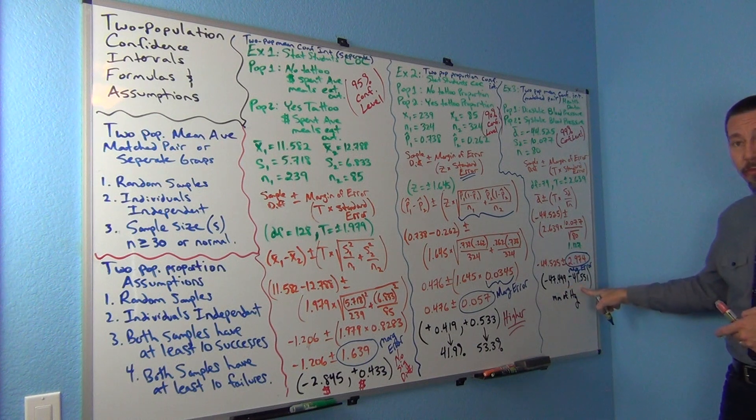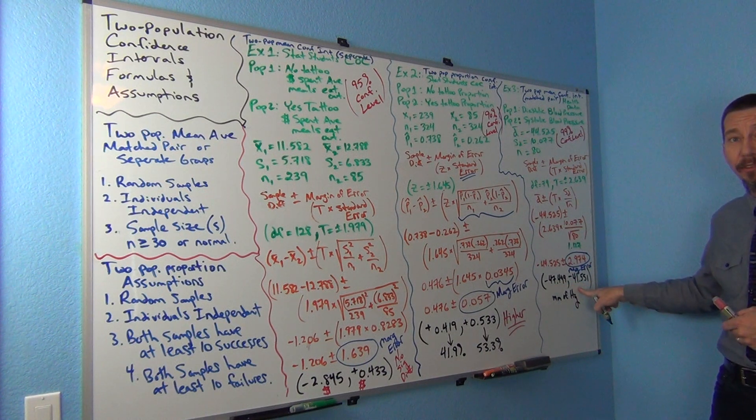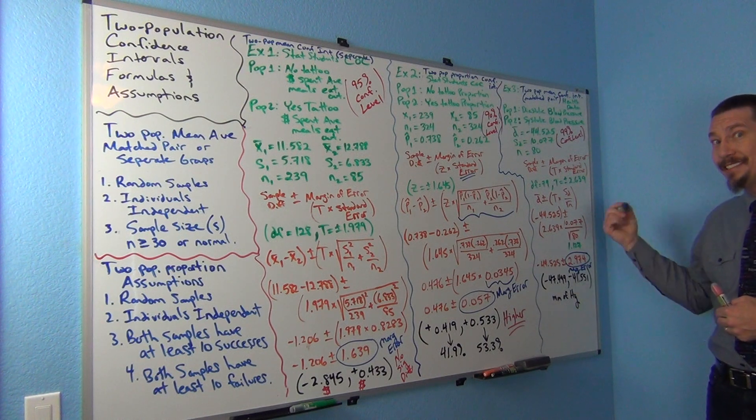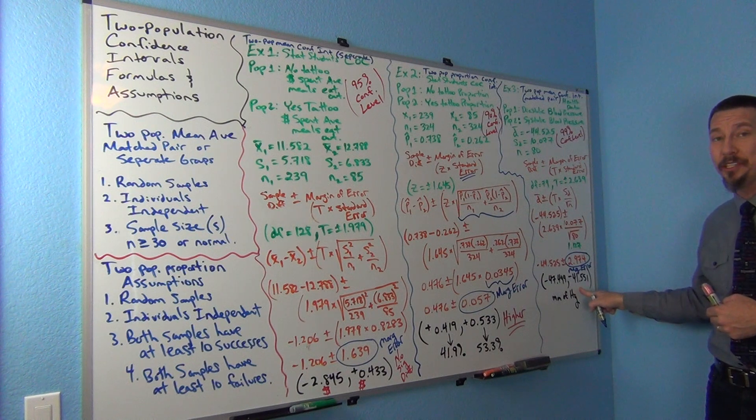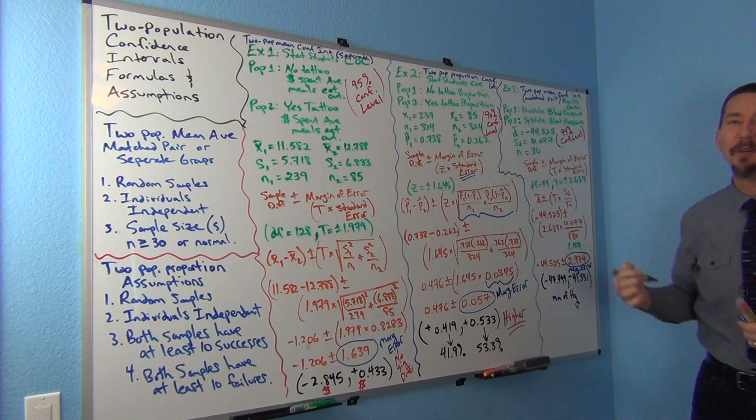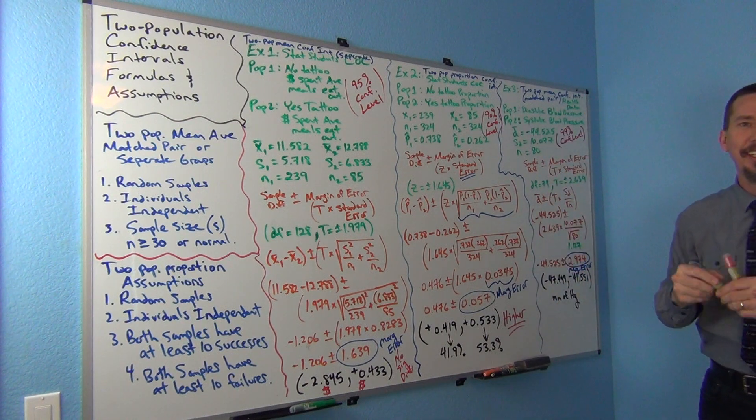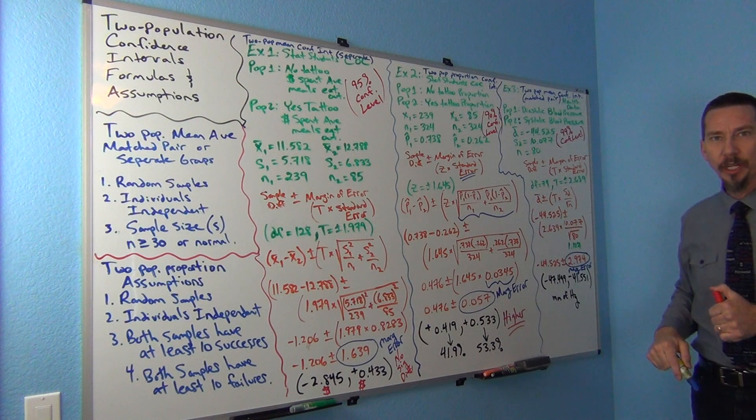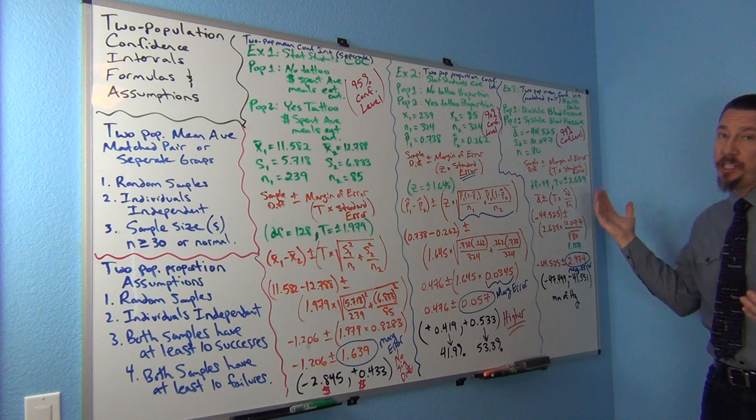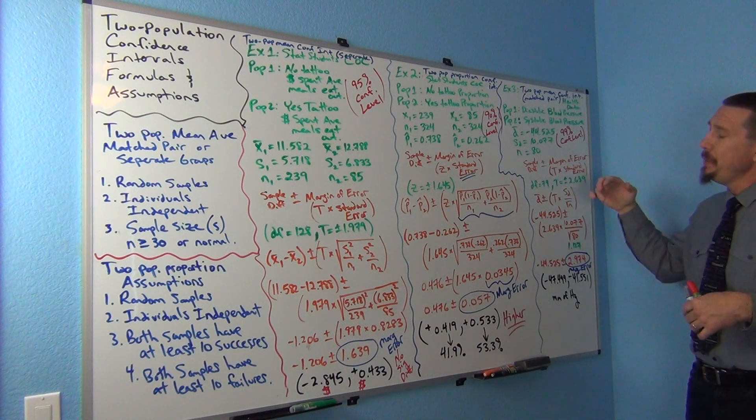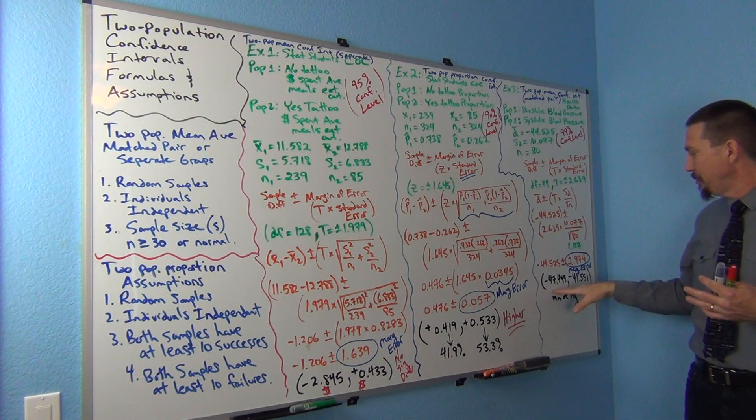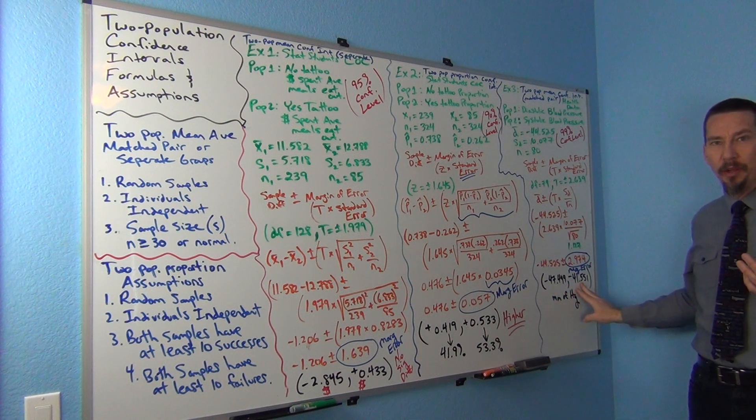Okay, and we got our confidence interval. Now we got negative, negative, right? Very important to sign. Okay, so we learned last time that negative, negative two population confidence interval means that population one is smaller, right? Smaller than the population two. And it's between these two numbers smaller, right? So basically, sometimes you'll see people say the population mean of the differences is between negative 47.499 and negative 41.551. Again, that's a correct sentence, but it's getting kind of confusing for people.